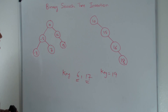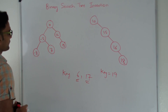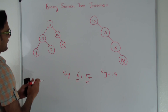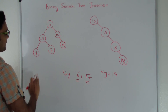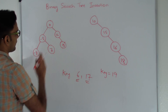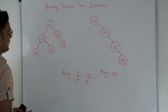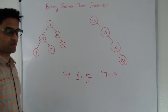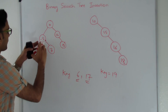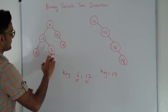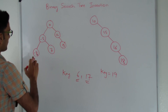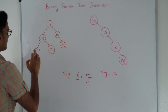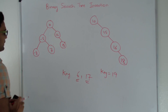Here is an example of a binary search tree. 10 is the root. Everything less than 10 is on the left side and everything greater than 10 is on the right side, and this is true for every node. So for minus 5, since 7 is greater than minus 5 it's on the right side, and minus 8 is less than minus 5 so it's on the left side.